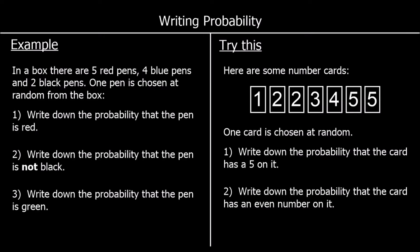Here's a different question. In a box there are five red pens, four blue pens, and two black pens. One pen is chosen at random from the box. Write down the probability that it's red. There are five red out of five plus four plus two, which is eleven in total. So five red out of eleven — the probability is five elevenths.